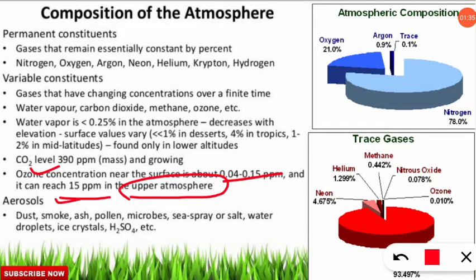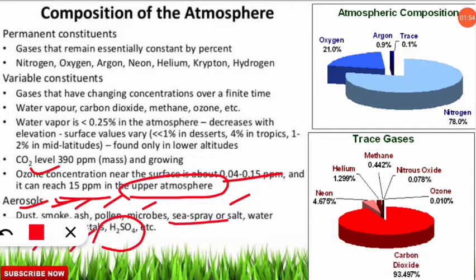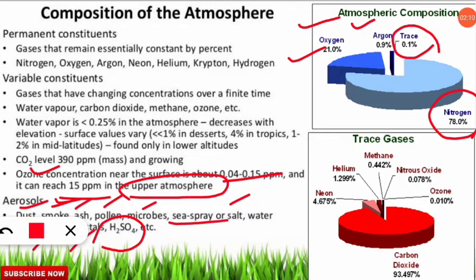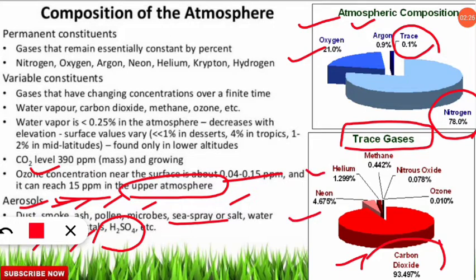Aerosols present in the atmosphere can be in the form of dust, smoke, ashes, pollen, microbes, sea spray or salt, water droplets, ice crystals, sulfuric acid, and nitric acid. In terms of atmospheric composition, nitrogen plays the maximum part at 78%, followed by oxygen at 21%, argon at 0.9%, and trace gases at 0.1%. Among trace gases alone, carbon dioxide has the highest proportion at approximately 93%, followed by neon, helium, methane, nitrous oxide, and ozone.